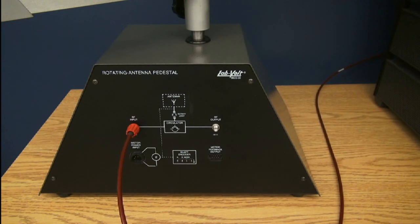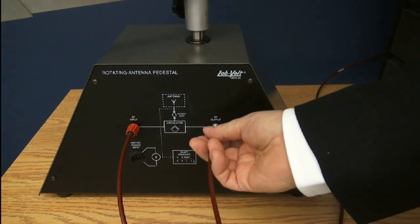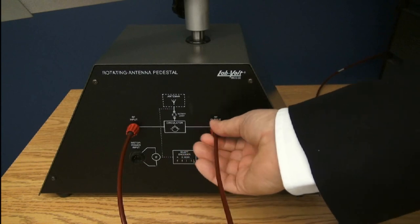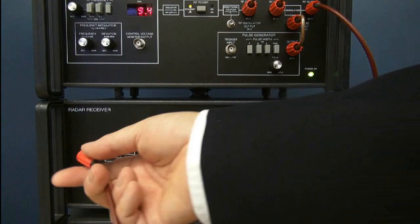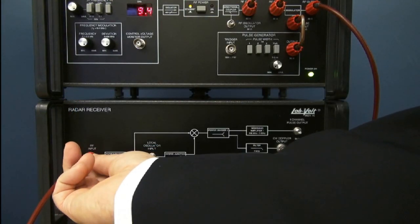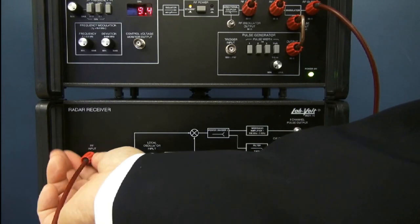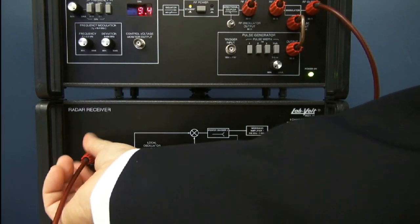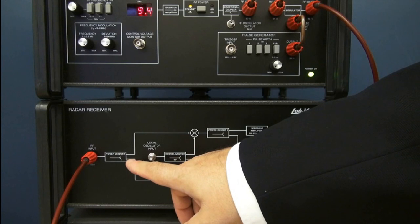Now the output of my RF will need to go back to my radar receiver. So I connect the return of my antenna to the RF input of the radar receiver. It first goes through a power divider.